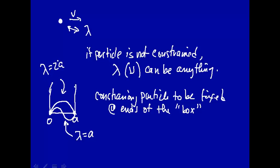But note that we can't have anything between 2a and a. We can't have something in between. Because if we have something in between, it won't meet those constraints we put on the wave function to start there and end there. There's constraints on the wave.